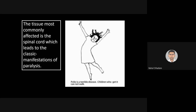Once poliovirus enters through the mouth, it moves to lymph nodes, where it may settle and grow. After that it enters the bloodstream, and through the blood it reaches mainly the spinal cord. In the spinal cord, peripheral nerve motor neurons — the neurons responsible for controlling movement — are paralyzed, and because of that the muscles cannot act. That is the main pathophysiology.